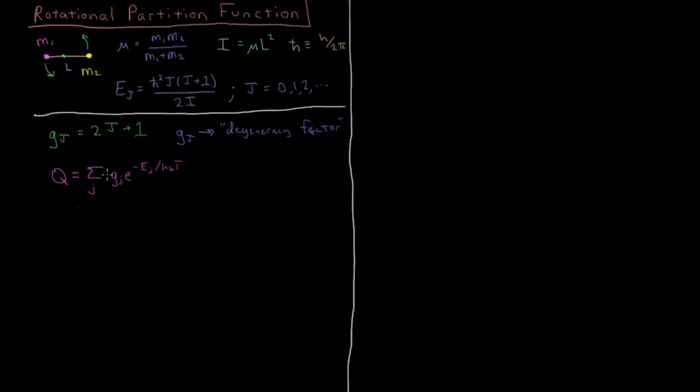So in our sum, there's going to be a multiplication of the number of states with that energy level times e to the minus beta ej, or e to the minus ej over kbt. Those two things are equivalent.